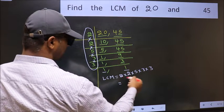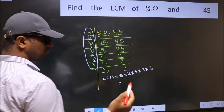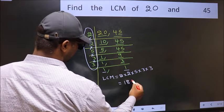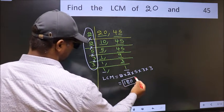When we multiply these numbers, we get 180. Check out where LCM is our LCM.